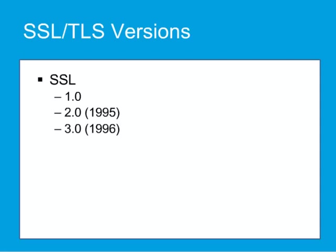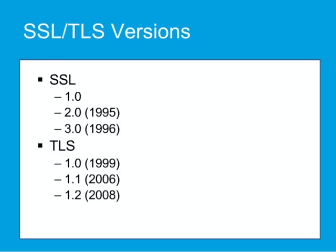Newer versions of SSL/TLS are based on SSL 3. TLS 1.0 was first defined in 1999 as an upgrade of SSL version 3. There is no interoperability between TLS 1.0 and SSL 3.0. TLS 1.1 was defined in 2006. TLS 1.2 is the current version, defined in 2008. TLS 1.3 is in the works but not yet released.